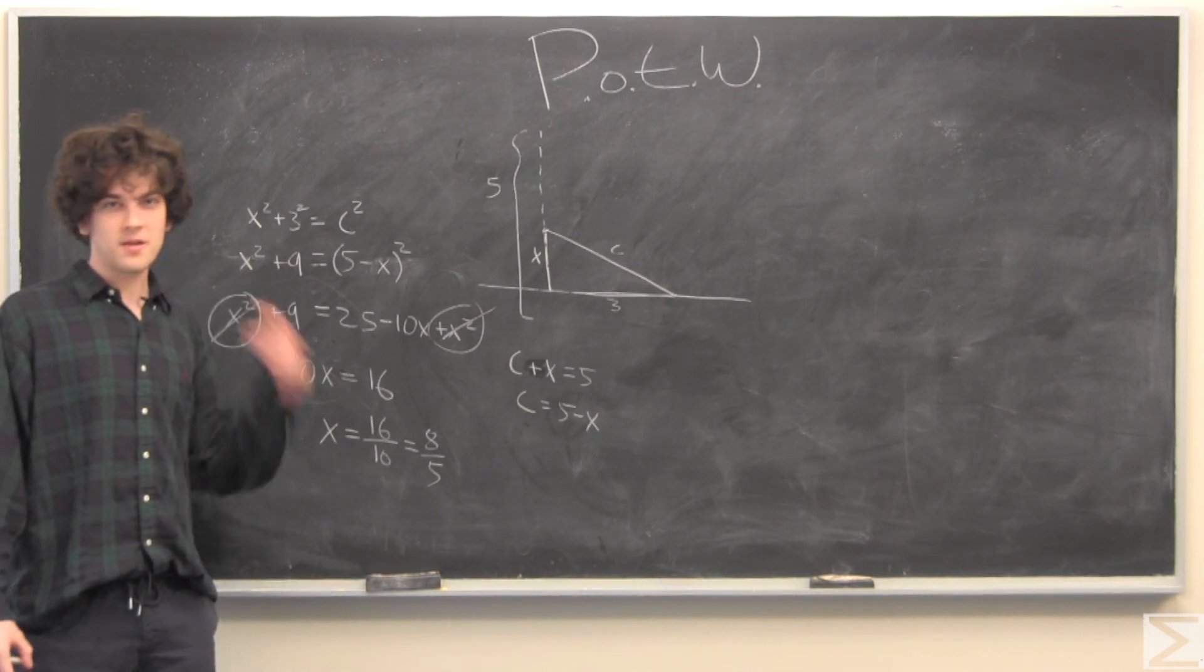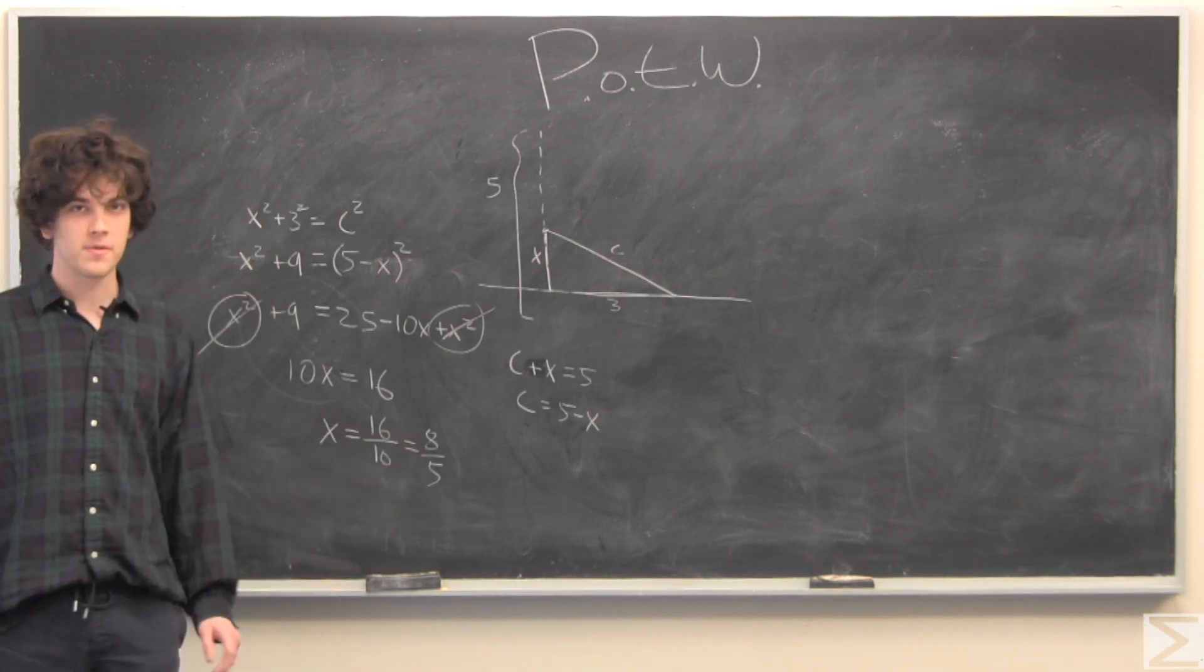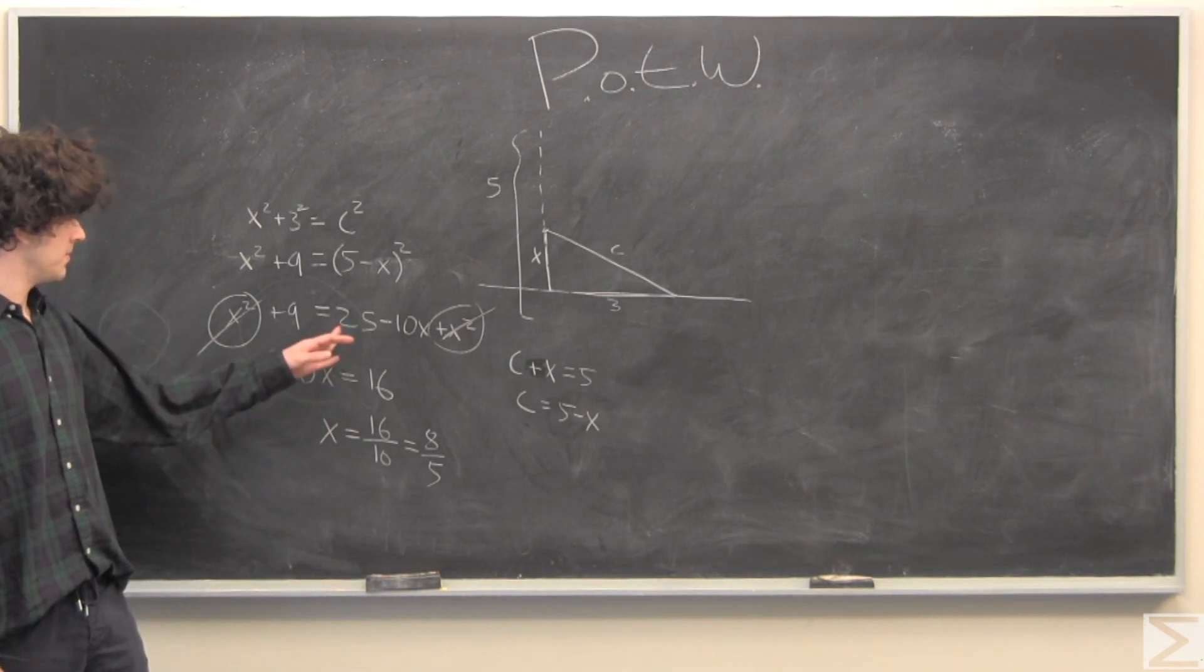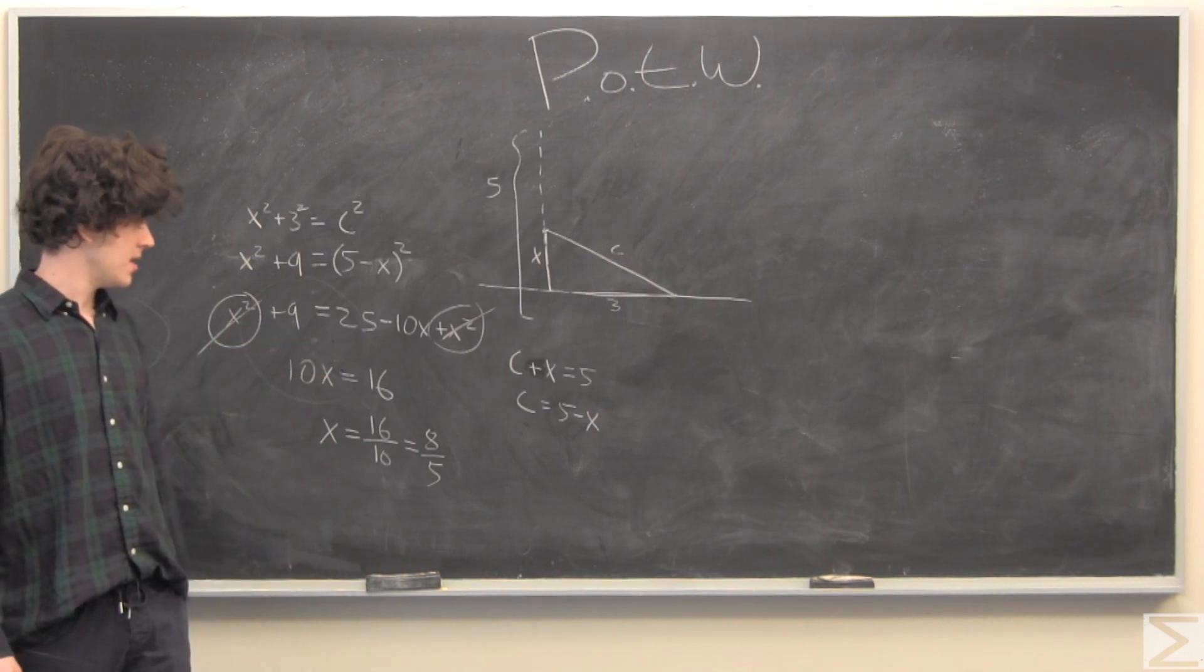If I did all my algebra correctly, x is going to be equal to 8 over 5. Of course, because we just subtract, add 10x to both sides and subtract 9 from both sides, and then divide by 10 and simplify.